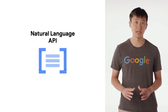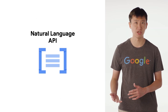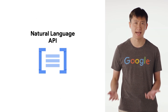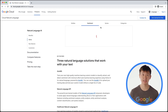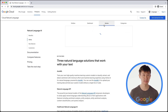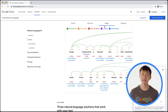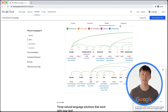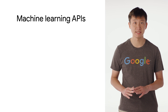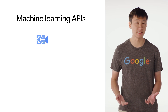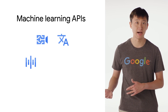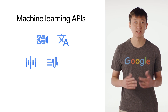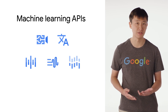Another machine learning API to check out is the Natural Language API, which helps you analyze text. You can detect entity keywords in the text, perform sentiment analysis, analyze syntax, and categorize the text based on its topic. There are also several other machine learning APIs, including the Video Intelligence API, Translation API, Speech-to-Text API, Text-to-Speech API, and the Cloud Inference API.